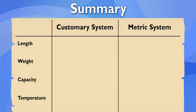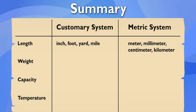For length, the customary system uses inches, feet, yards, and miles, and the metric system uses variations on the meter. For weight, the customary system uses ounces and pounds, and the metric system uses grams and kilograms.